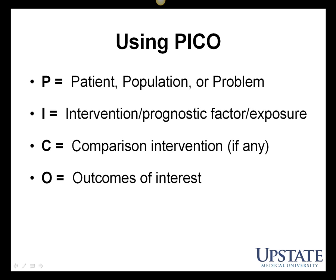PICO is an acronym that describes the elements of a well-formed clinical question. P equals patient, population, or problem. I equals intervention, prognostic factor, or exposure. C equals comparison intervention. O equals outcomes of interest. We'll use PICO to identify the appropriate elements in our clinical scenario, then use those elements to form our clinical question.